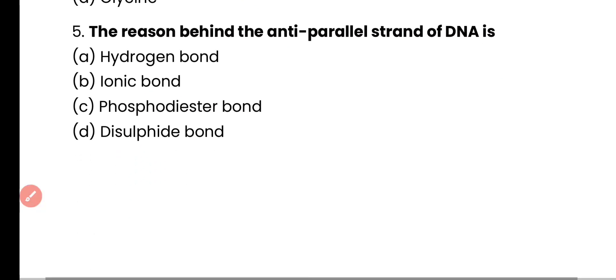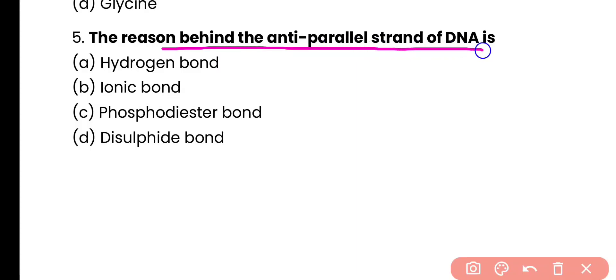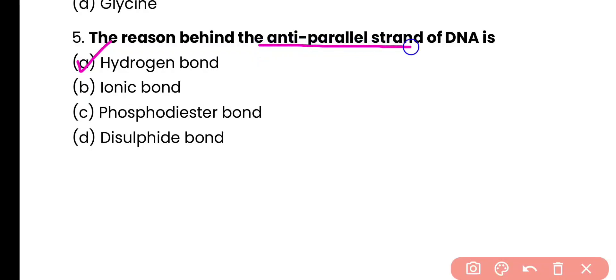Question number 5. The reason behind the anti-parallel strand of DNA is hydrogen bond, ionic bond, phosphodiester bond, or disulfide bond? Correct answer is option A. Hydrogen bond is responsible for anti-parallel strand formation of DNA.